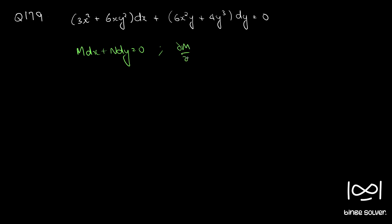We will check the necessary and sufficient condition for exactness: ∂M/∂y = ∂N/∂x. We will check whether the given equation is exact using this necessary and sufficient condition for a differential equation of this form to be exact.